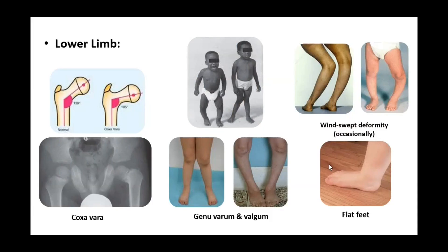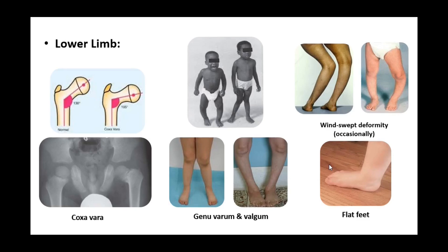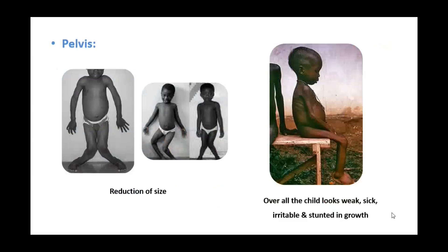In the lower limb, coxa vara is seen — a condition where the angle between the neck and shaft of the femur is reduced from the normal 130 degrees to around 105–106 degrees. Genu valgum and genu varum are common deformities, also called knock knee and bow leg, typically presenting when the child starts walking. Windswept deformity, both unilateral and bilateral, and flat feet are also seen, along with reduction in pelvic size.